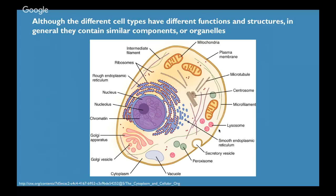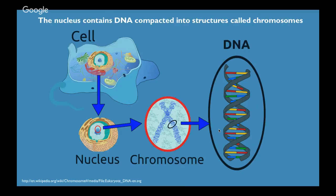If you look into each of these cells, there are some differences depending on what tissue they are in. But in general, they have similar components called organelles. Within your cells you have the mitochondria, where cells produce energy; lysosomes that break down factors the cells come in contact with; and the nucleus. A lot of what we'll focus on today is happening in the nucleus, because that's where the DNA gets compacted into structures called chromosomes.